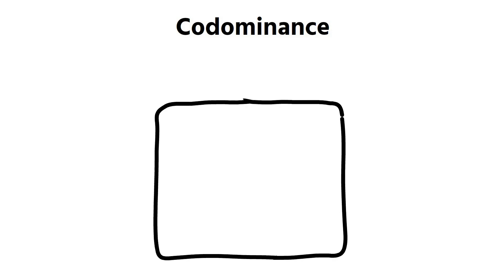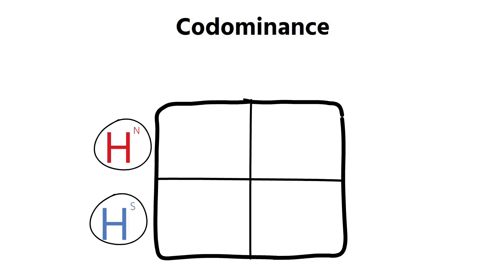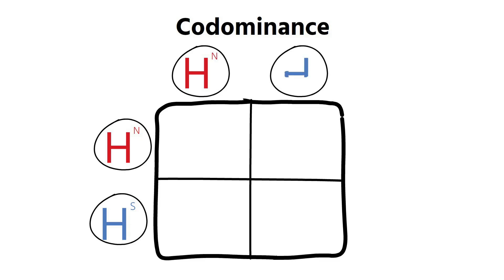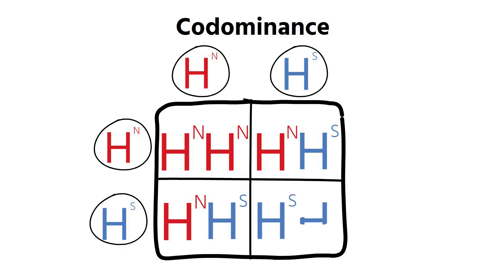Sometimes alleles can show codominance, meaning both alleles in the genotype are expressed in the phenotype — there's no recessive allele. A good example is sickle cell anemia. The notation uses the same capital letter H, with a superscript to tell the difference: normal hemoglobin is H superscript N, and sickle cell hemoglobin is H superscript S.